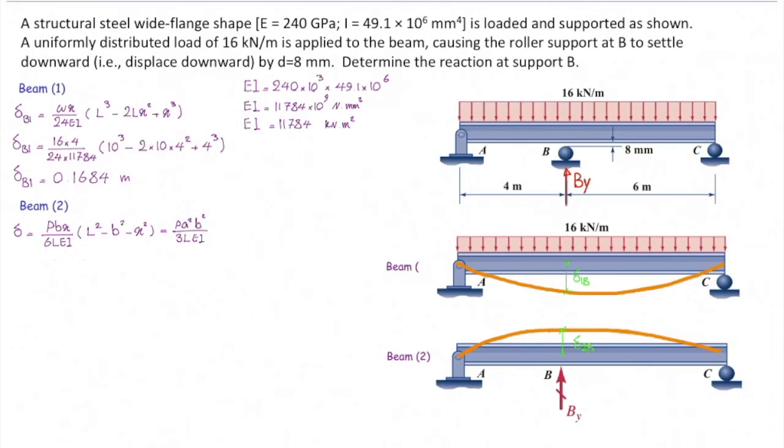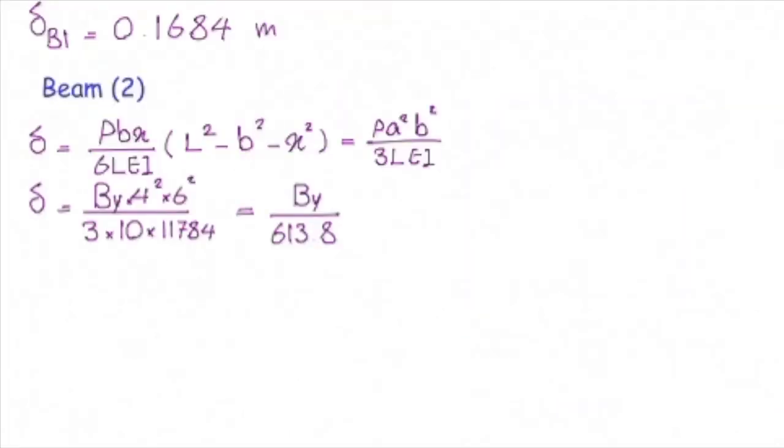Now let's plug the values into this equation. P is an unknown force which we called it BY. A is distance of point B to support A which is 4 meter. B is distance of point B to the right of that beam which is 6 meter and I divide that by 3LEI and that gives us BY divided by 613.8. So this is deflection in the second beam at point B.